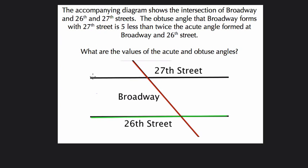So we're looking at the intersections of streets and avenues in terms of angles. They tell us the obtuse angle that Broadway forms at 27th Street. Here's 27th Street. The obtuse angle is an angle above 90, so it's either this one,